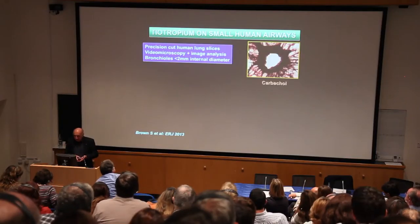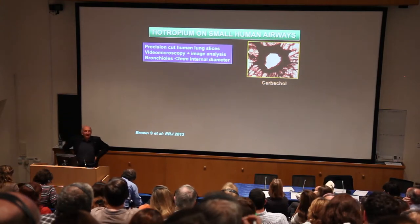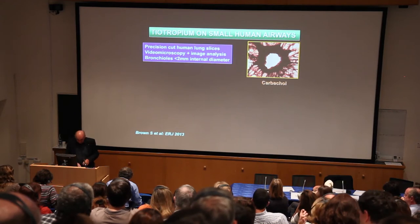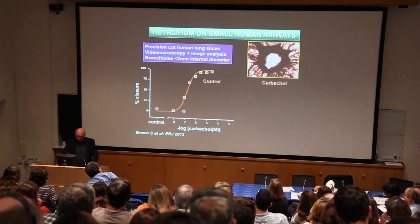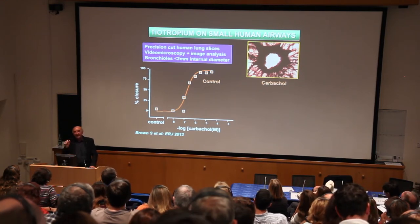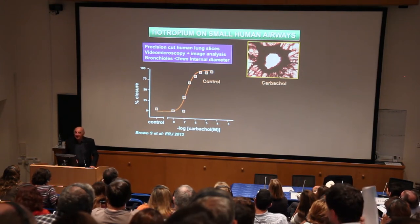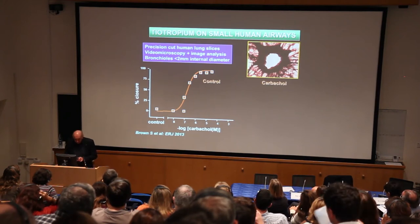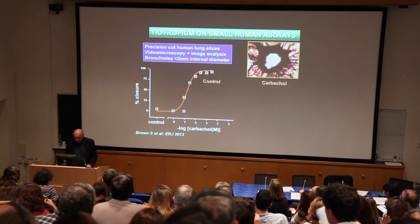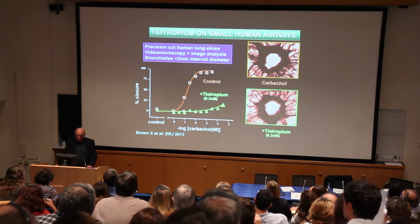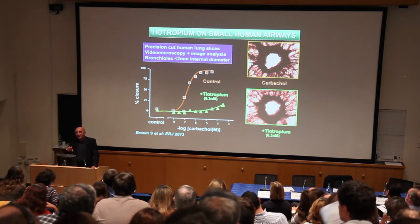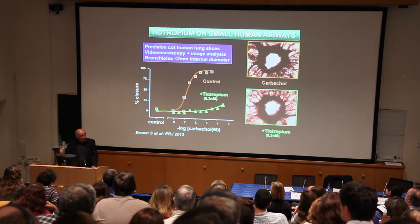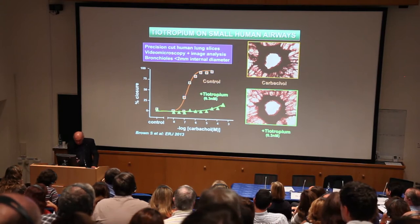We can now study the pharmacology of human airways by taking lung slices, and look at small airways down a microscope. You can measure the area so that if you add a cholinergic agonist like carbachol, you can see the airway contracting as the percent closure increases until it closes completely — like air trapping. But if you give the same carbachol in the presence of tiotropium, you can see it stops the contractile effect and prevents closure. The first airway closes and the other doesn't close because tiotropium prevents the closure.